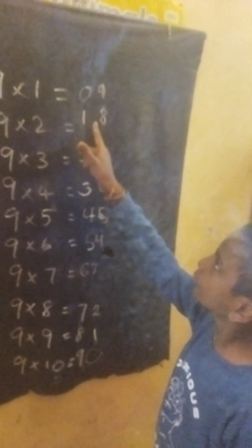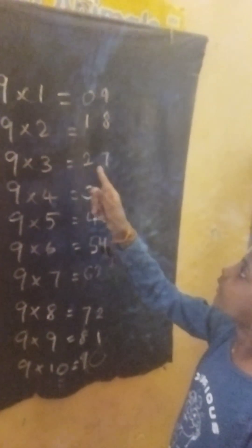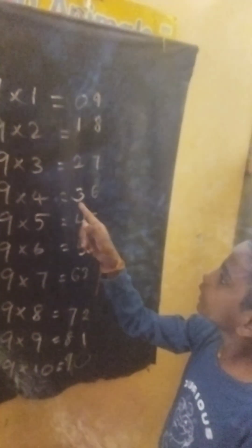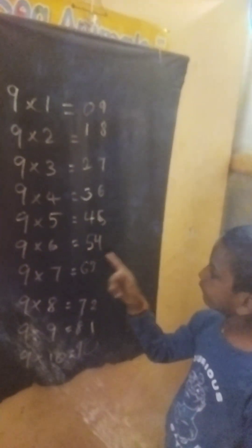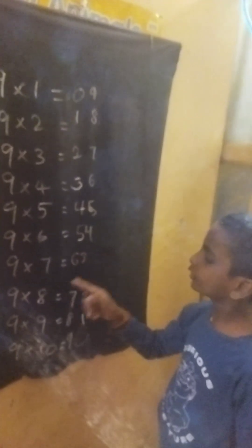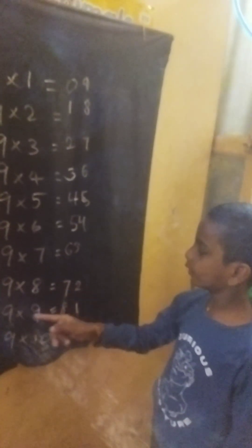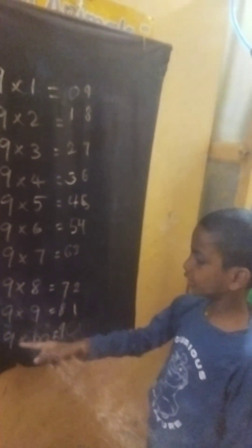9 times 1 is 9, 9 times 2 is 18, 9 times 3 is 27, 9 times 4 is 36, 9 times 5 is 45, 9 times 6 is 54, 9 times 7 is 63, 9 times 8 is 72, 9 times 9 is 81, 9 times 10 is 90.